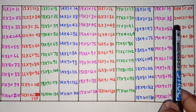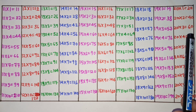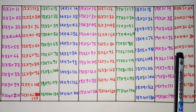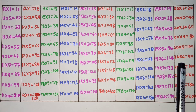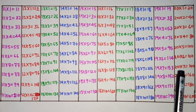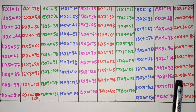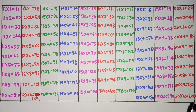20 ones are 20, 20 twos are 40, 20 threes are 60, 20 fours are 80, 20 fives are 100, 20 sixes are 120, 20 sevens are 140, 20 eights are 160, 20 nines are 180, 20 tens are 200. Thank you.